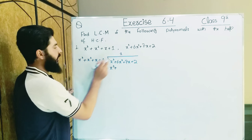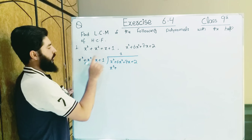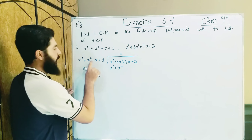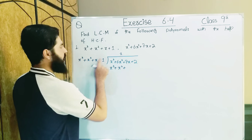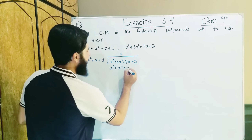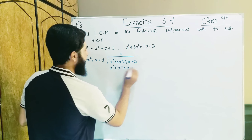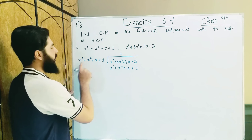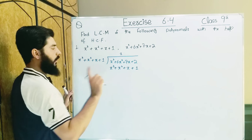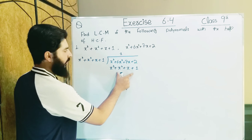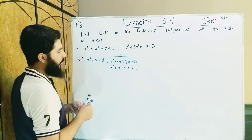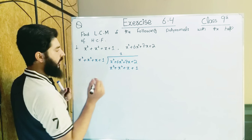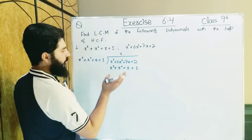When x³ is multiplied by x³, plus and plus gives plus. When x is multiplied by 1, it will be multiplied by x — plus and plus gives plus. When x³ is multiplied by 1, it will be multiplied by 1.